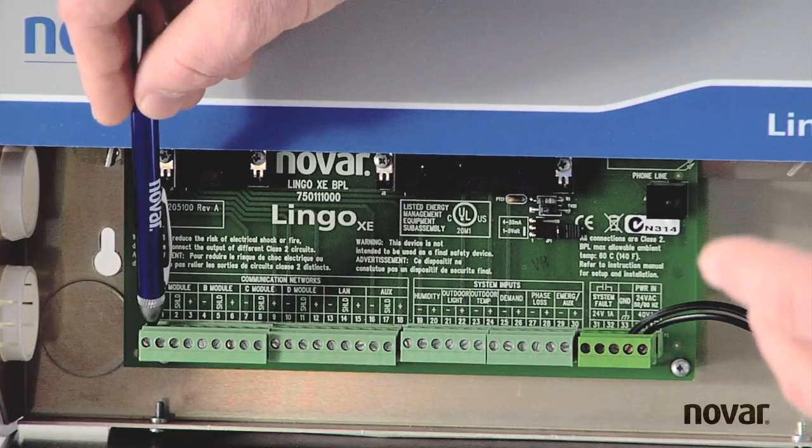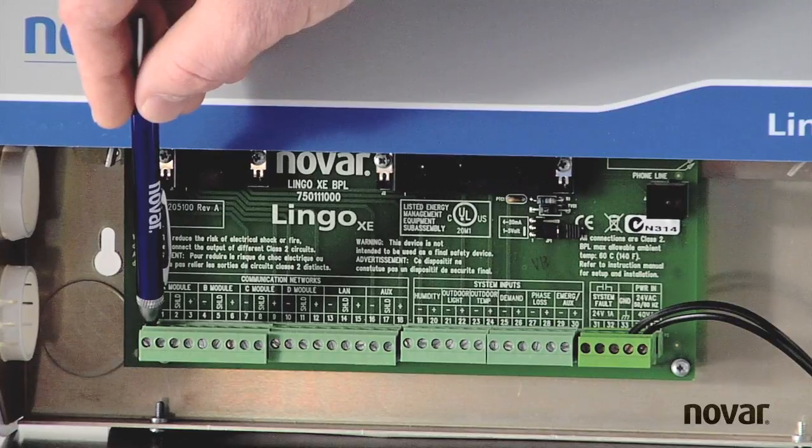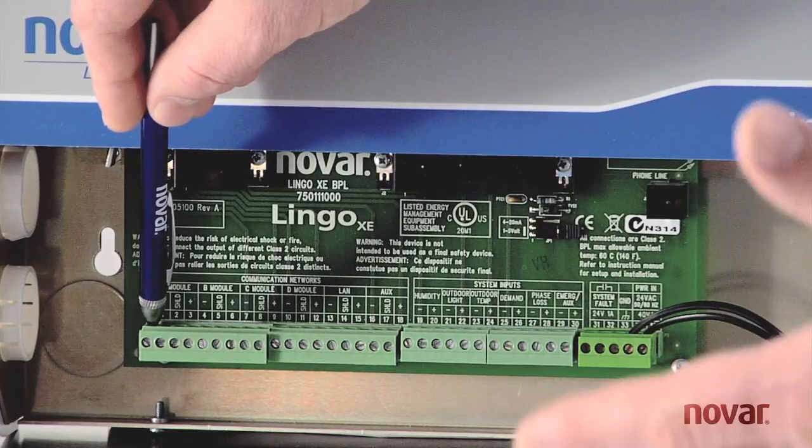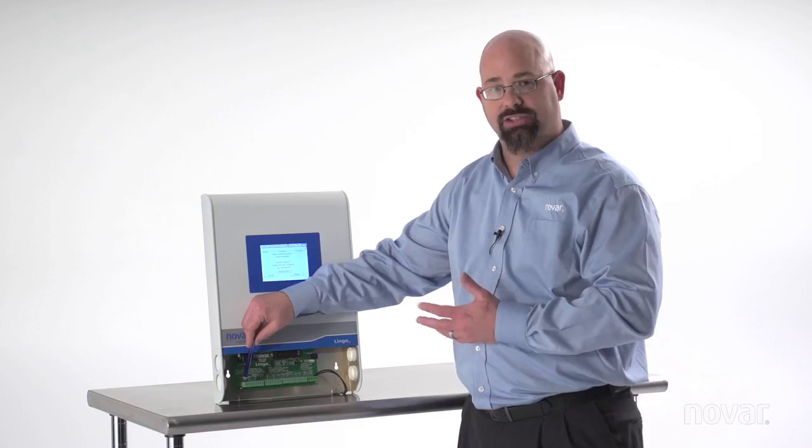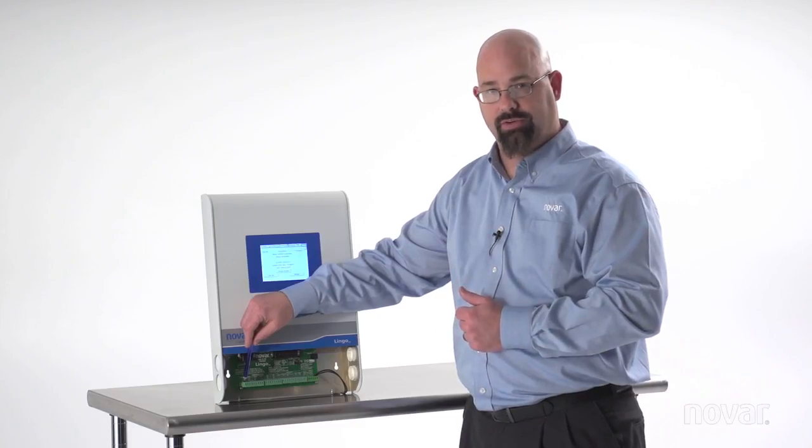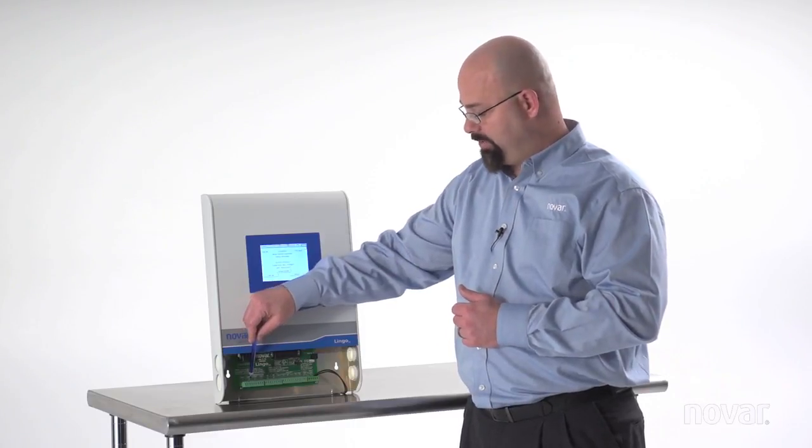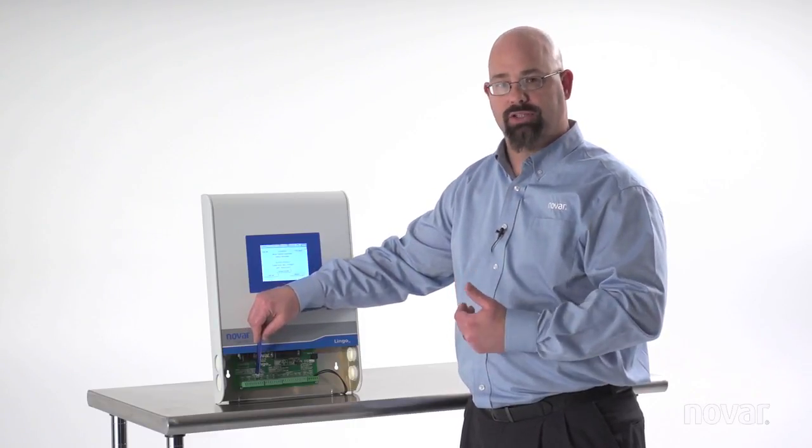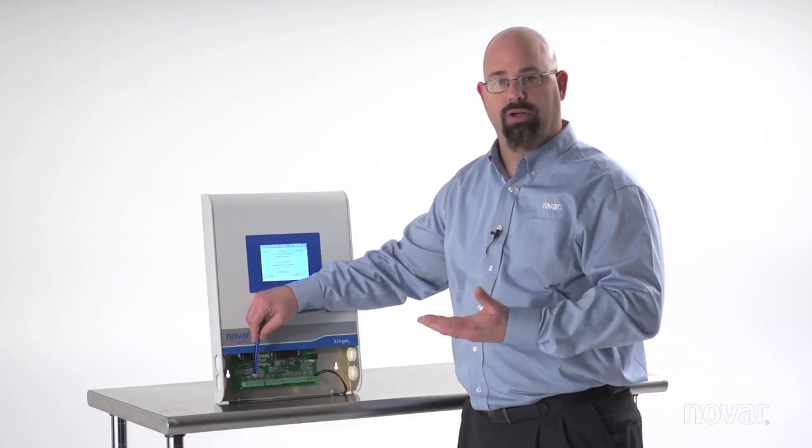To the far left side of that is my module COM ports. I happen to have four of them in the Lingo XE. The 2 to 3 volts DC we talked about before is required when I have 24 VAC and no wires attached. I will see that 2 to 3 volts DC here again between positive and shield and negative and shield. And he uses that for all the modules under his logical control whether that's HVAC modules manufactured by Novar, lighting modules.